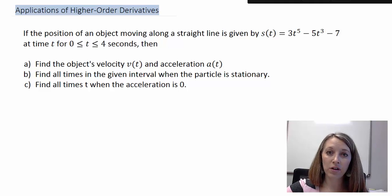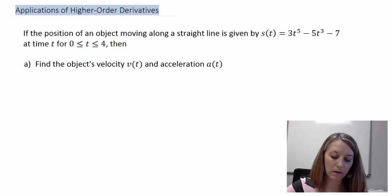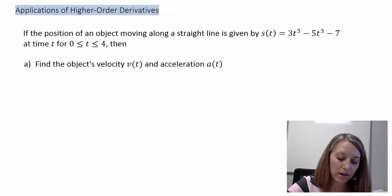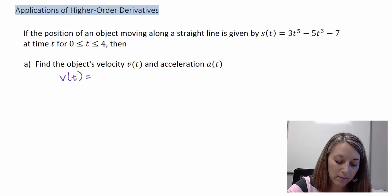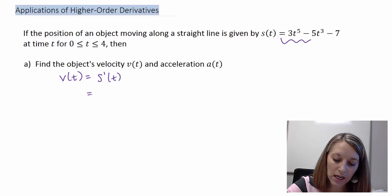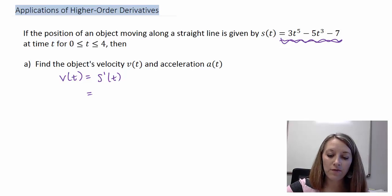I have given you all the information you need to answer this on your own, so here is where I suggest you pause the video. To figure out the velocity equation v of t, we know that comes from taking the derivative of our original equation. Everything is in the format of a constant times x to some power, so we just apply the power rule shortcut.